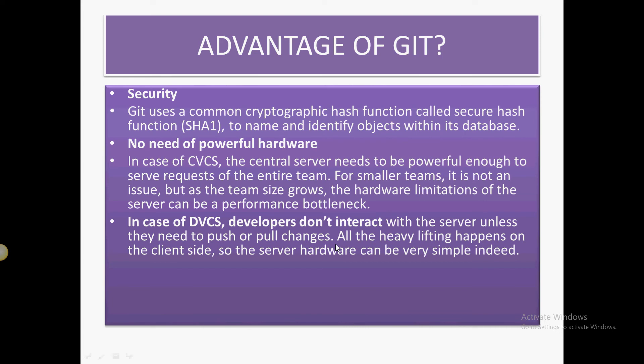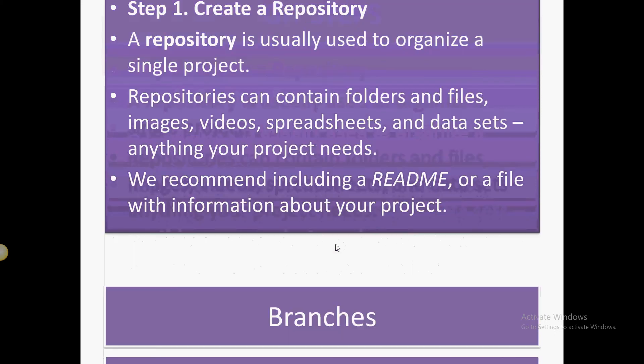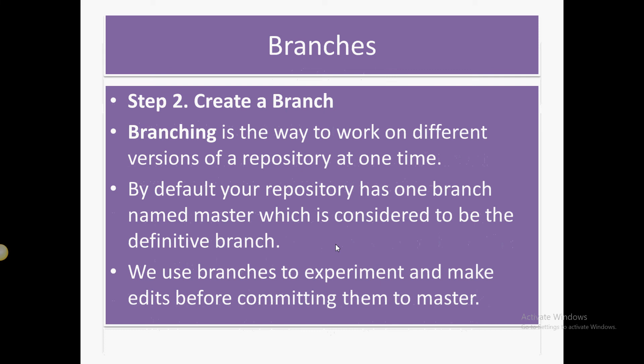Now let's talk about the Git steps. The first step is to create a repository. A repository basically contains folders, files, images, videos, datasets — anything related to the project. Before doing anything, a repository needs to be created, and at the root of the repository there should be a README file that provides information about the project.